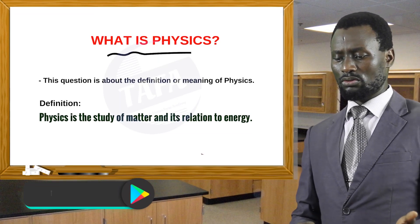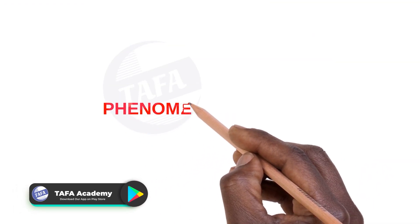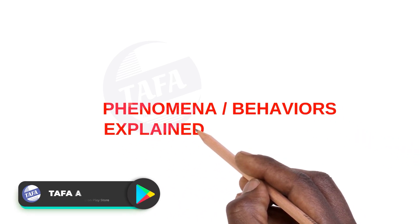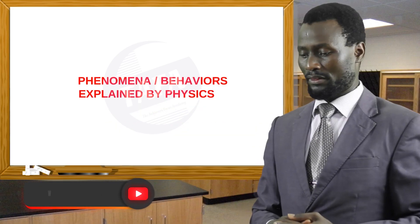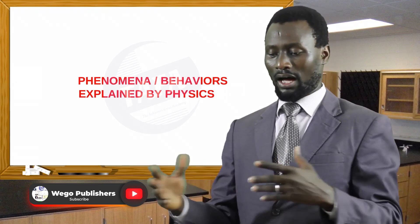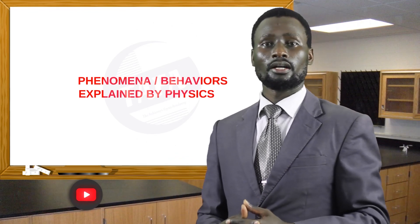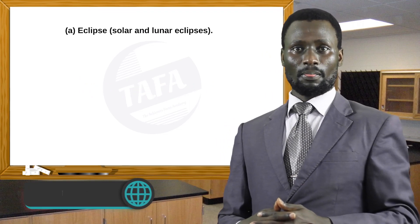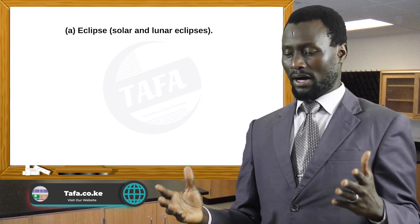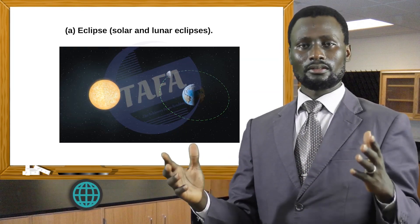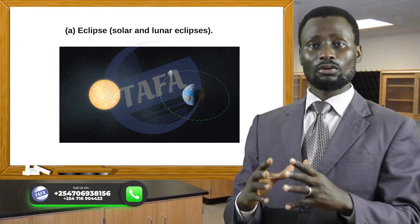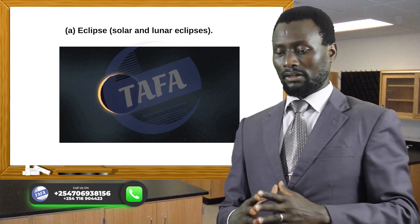We quickly go to behaviors or phenomena — occurrences in nature that one requires physics knowledge to explain. One such phenomenon that occurs every so often in nature is an eclipse. You have learnt about solar and lunar eclipses; you are amazed by the sun or moon partially or totally disappearing, and that is something physics is going to explain.